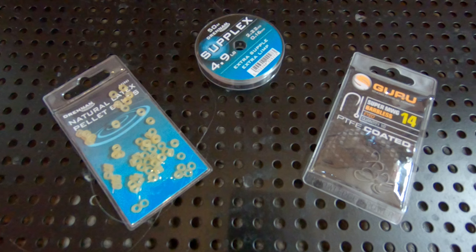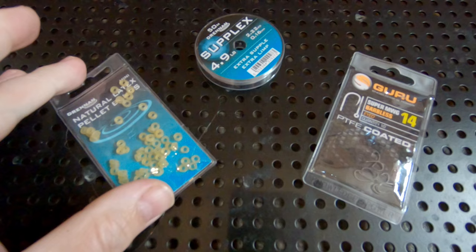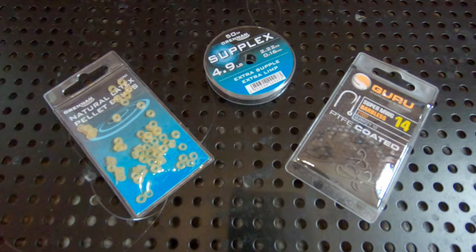Before I show you how to hair rig the corn, what I'll do is show you how to make a banded hook length. For this you'll need some pellet bands, some rig material and some eyed hooks.